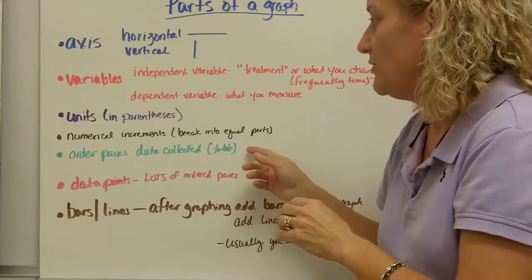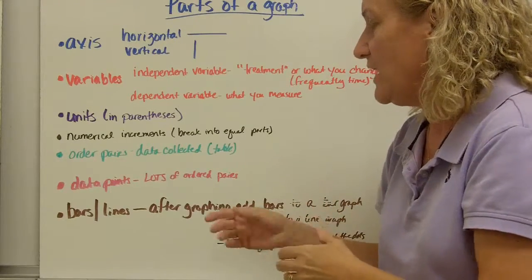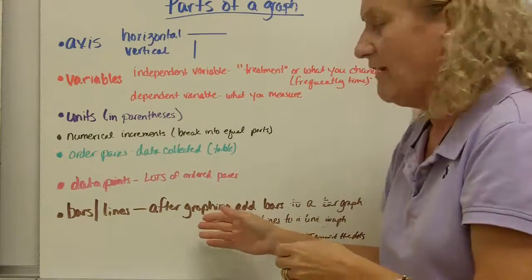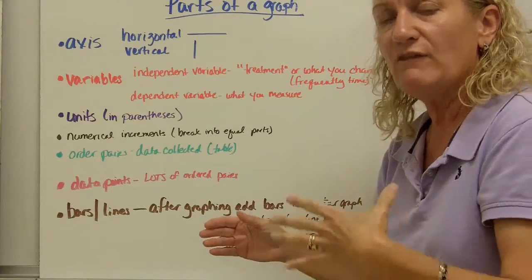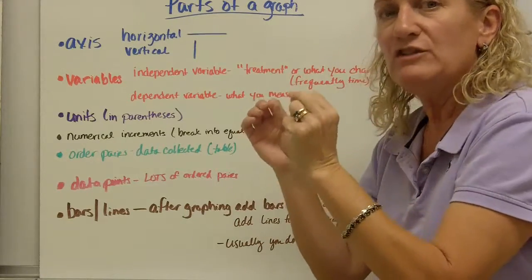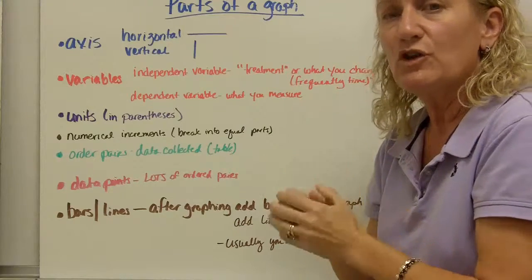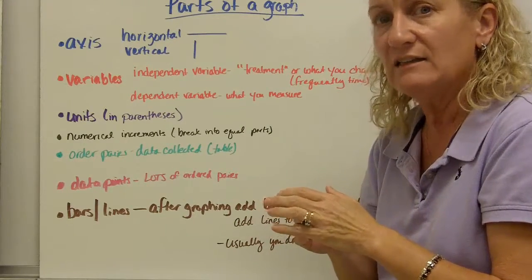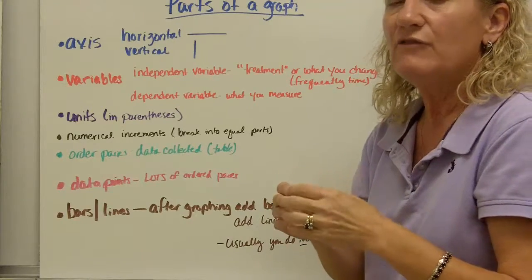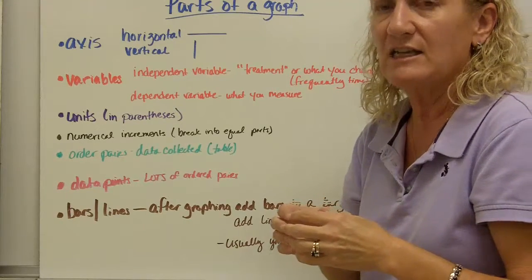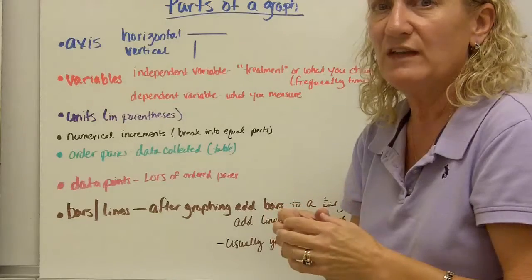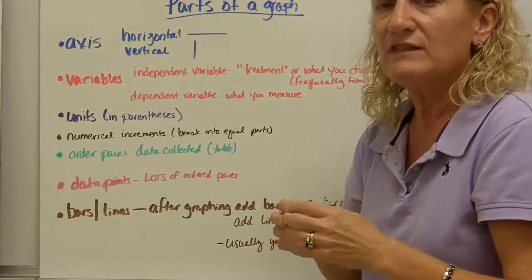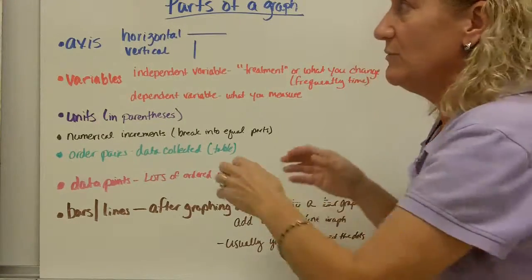There should be data points, which are lots of ordered pairs. And finally, bars and lines. After you're graphing, if you're making a bar graph, after you plot those points, you connect them in a bar or you connect the dots in a line. Now, we don't always connect dot to dot in a line. In fact, we frequently do not connect dot to dot. We put in what's called a line of best fit. But if you're doing a line graph, it's connected with a line. A bar graph is connected with a bar.